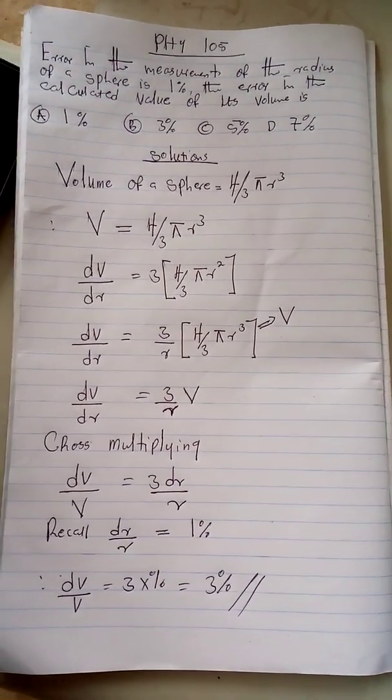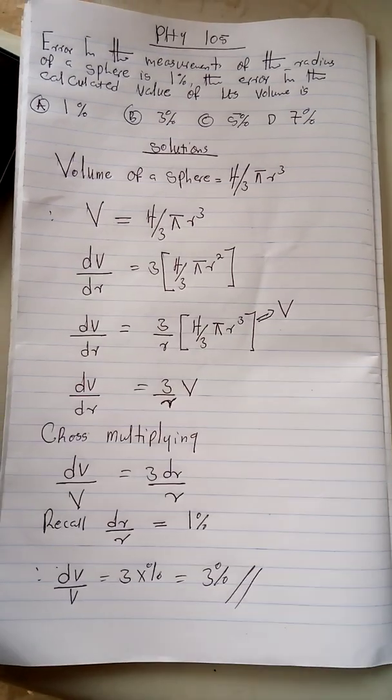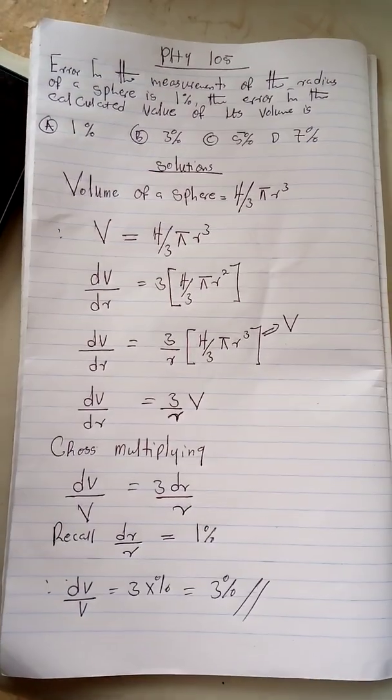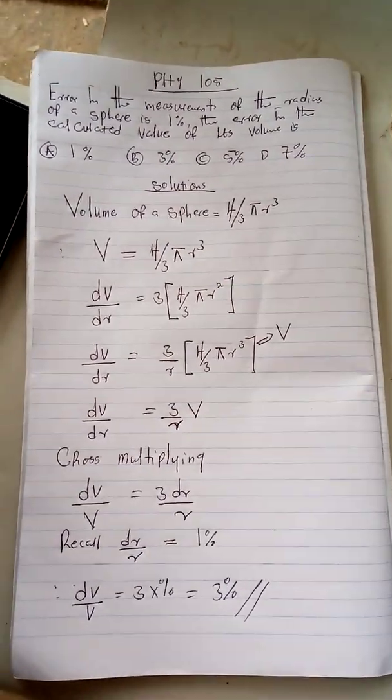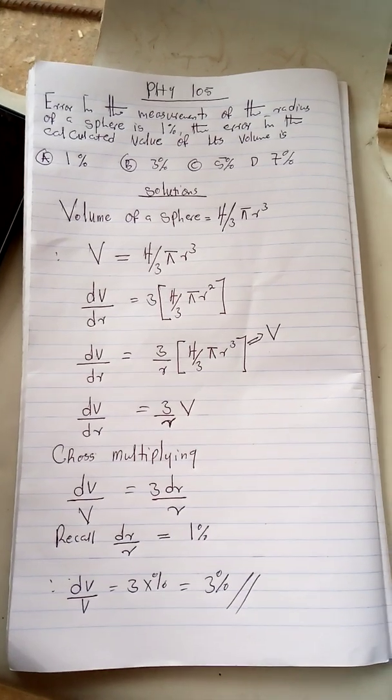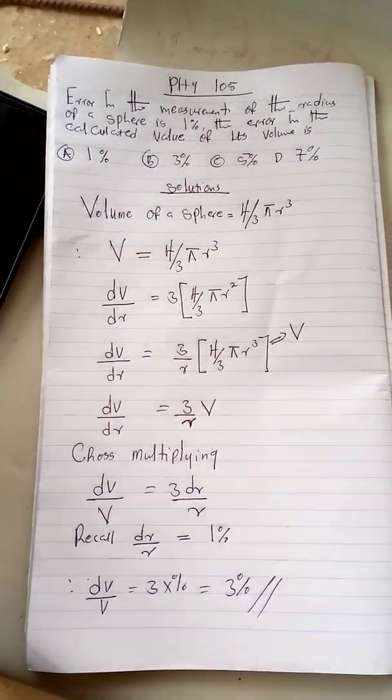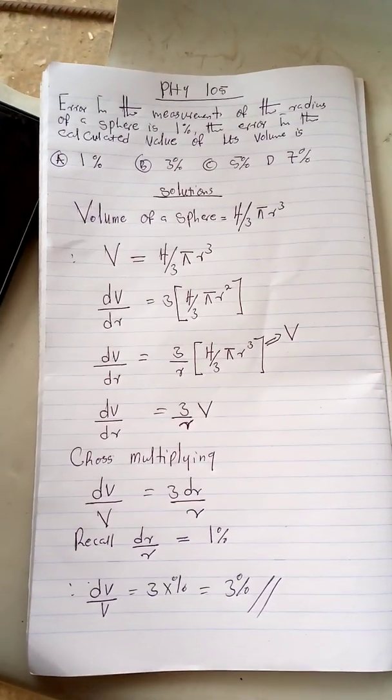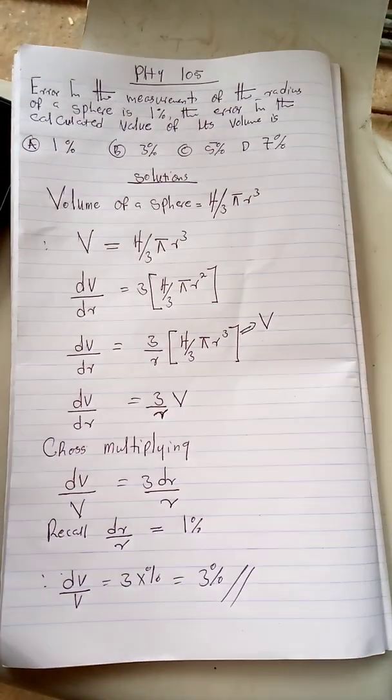When we differentiate V with respect to r, we have 3 multiplied by 4 over 3 pi r squared. Now we can keep the 4 over 3 pi r squared in a bracket and then manipulate stuff out here.